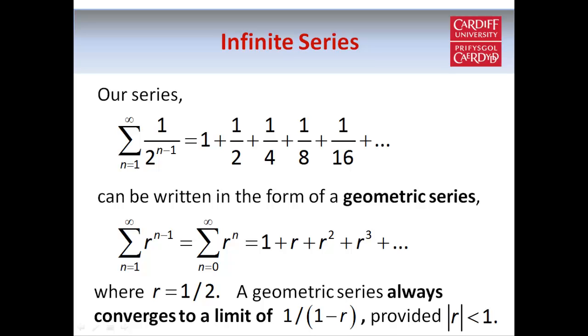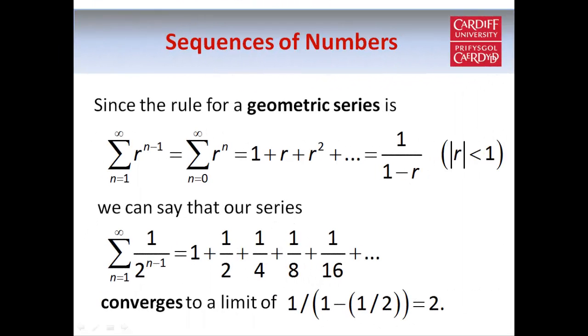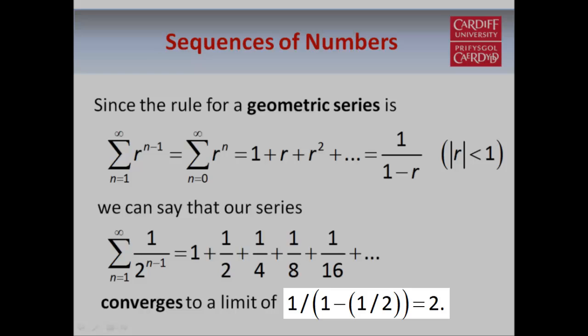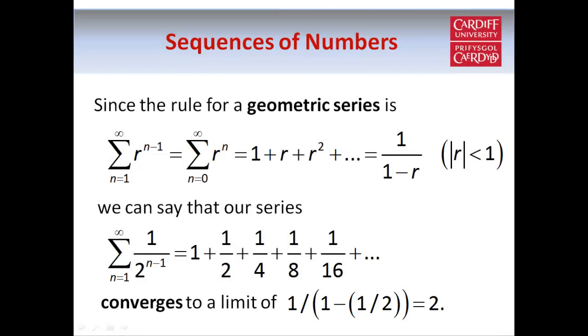A geometric series always converges to a limit of 1 over 1 minus r provided that the modulus of r is smaller than 1. So given that we have a geometric series with a multiplier of r equals a half we can work out that the limit of our series, which you can think of as being the total of all the terms in the series even though we have infinitely many of them, is equal to 1 over 1 minus a half which is 2. And of course we saw in the diagram earlier that the terms in our sequence of partial sums approached a limit of 2.